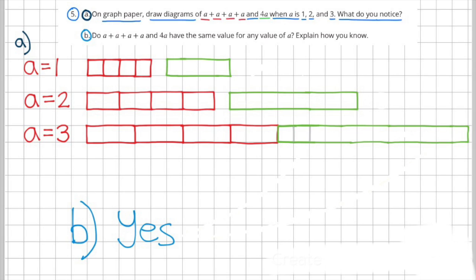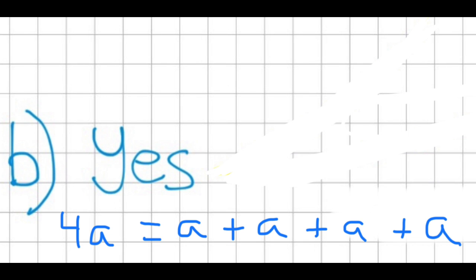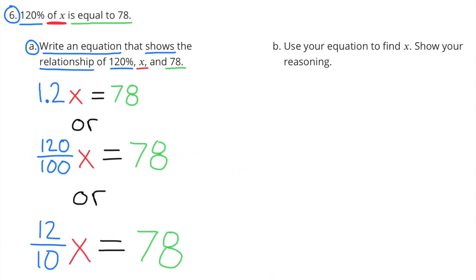Number 5B. Do A plus A plus A plus A and 4A have the same value for any value of A? Explain how you know. Yes, 4A equals A plus A plus A plus A, and the proof is in the work that we just did for A.